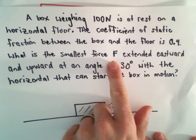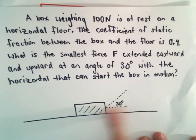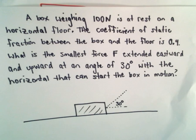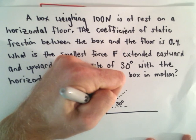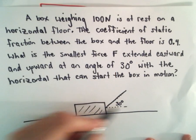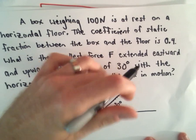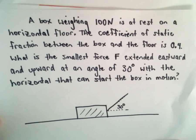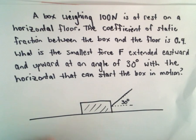We want to figure out what's the smallest force F extended eastward and upward at an angle of 30 degrees with the horizontal that can start the box in motion. So maybe, you know, you've got somebody holding on to a string here that makes an angle of 30 degrees, and they want to start pulling that box to the right. We want to know what's the smallest force that will start it moving.